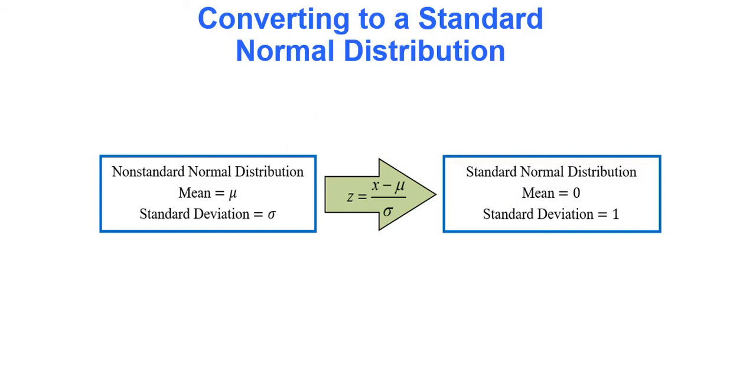So what's the difference between a standard normal distribution and a normal distribution? Well, if you take a non-standard normal distribution with mean mu, standard deviation sigma, and you apply the z-score formula to every single data value, the z-score formula is x minus mu over sigma, then everything is converted to z-scores and that's where standard normal distribution comes into play. A standard normal distribution always has a mean of zero and a standard deviation of one.